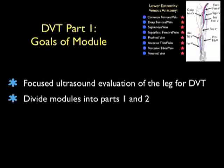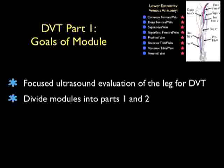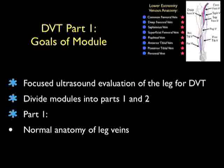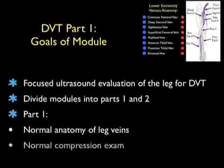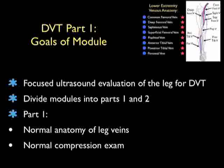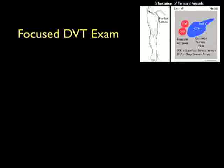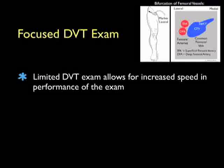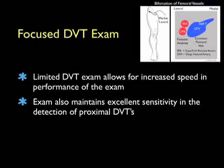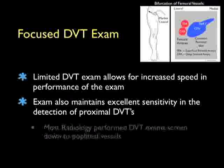I've divided this module up into parts 1 and 2. In this module, entitled DVT Ultrasound Part 1, we'll first learn the normal anatomy of the leg veins integral to performance of the DVT ultrasound examination. We'll then learn the normal compression exam of the leg veins and how to interpret normal findings on the bedside DVT examination. We're going to concentrate on the focused DVT examination, which allows for increased speed. We'll concentrate on two specific areas of the leg: the femoral region and the popliteal region. This limited examination also maintains excellent sensitivity in the detection of proximal DVTs.